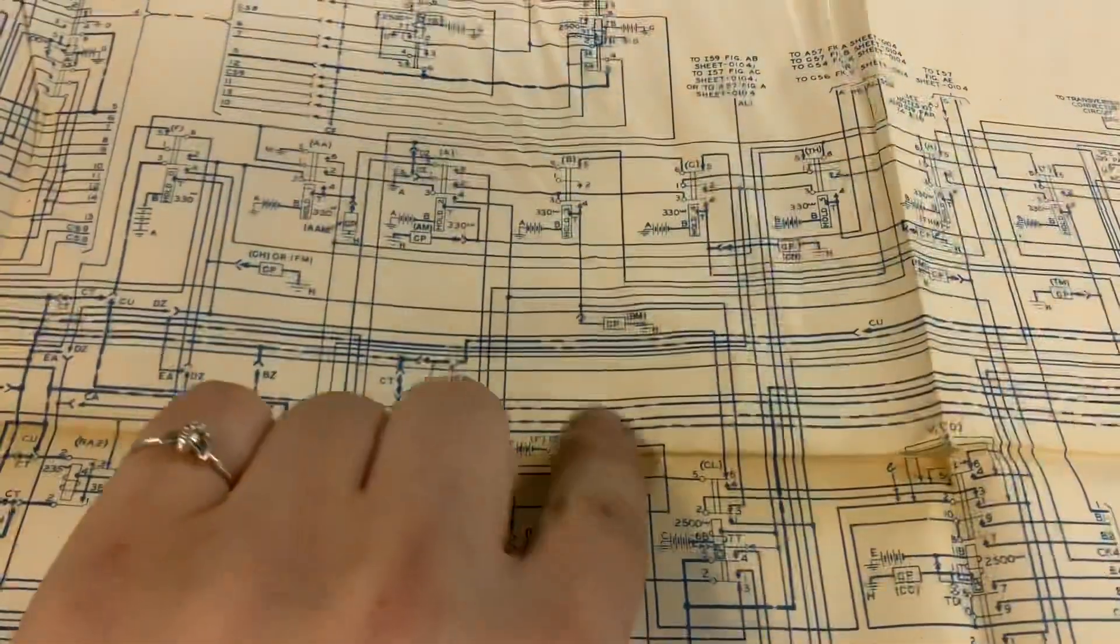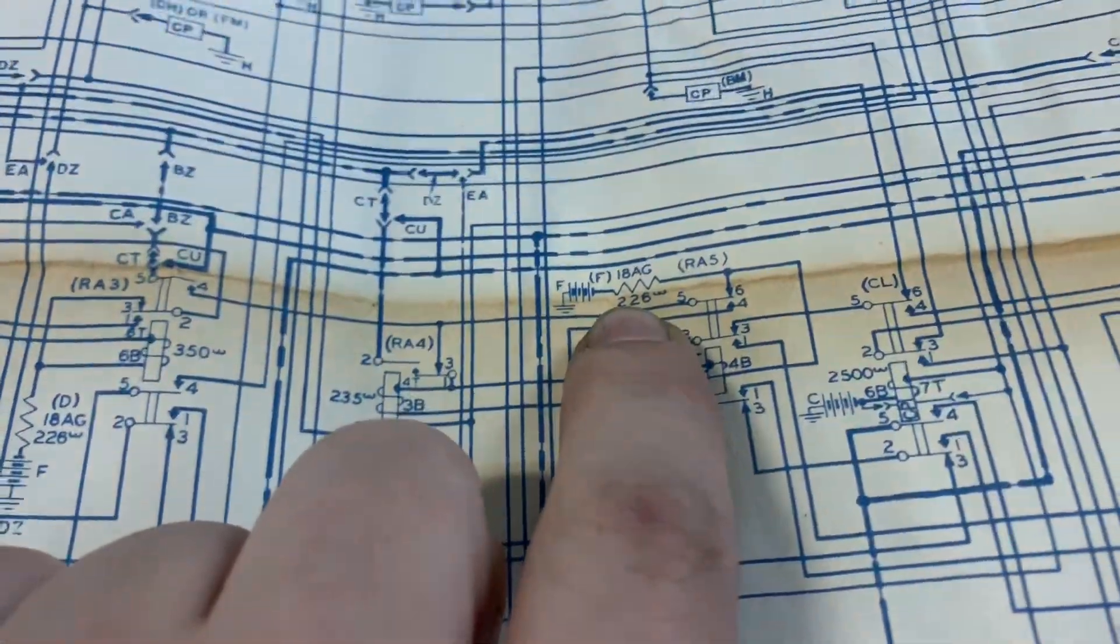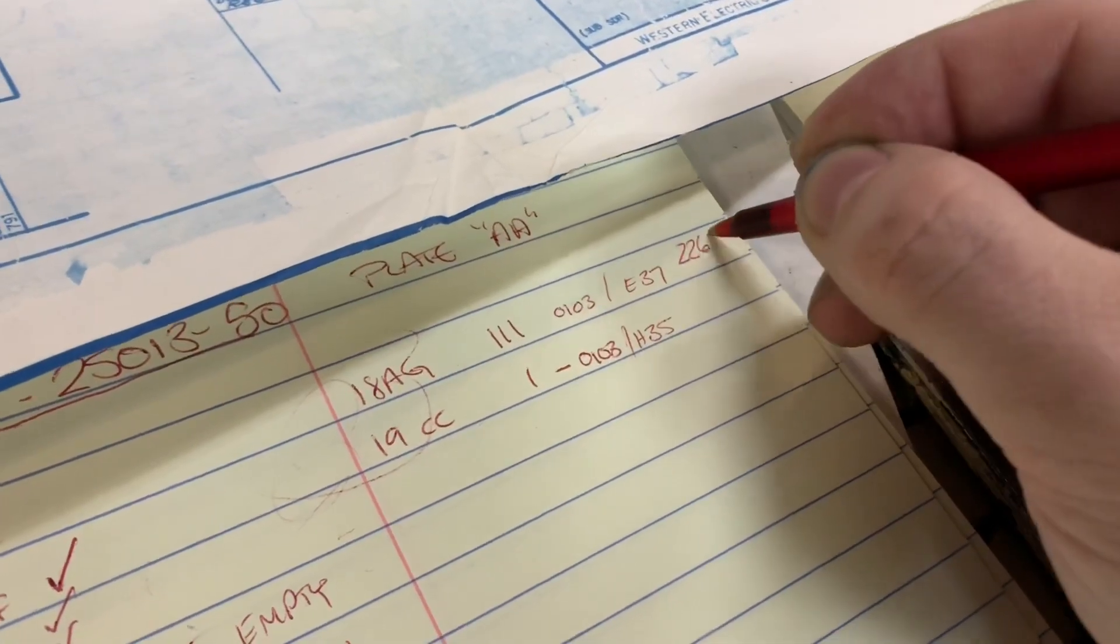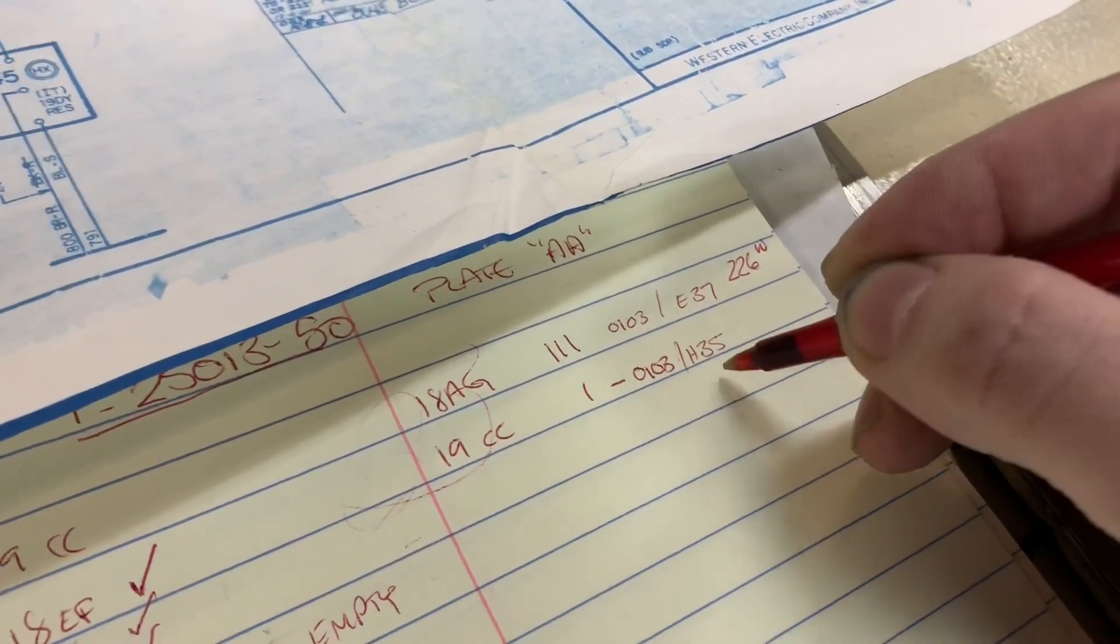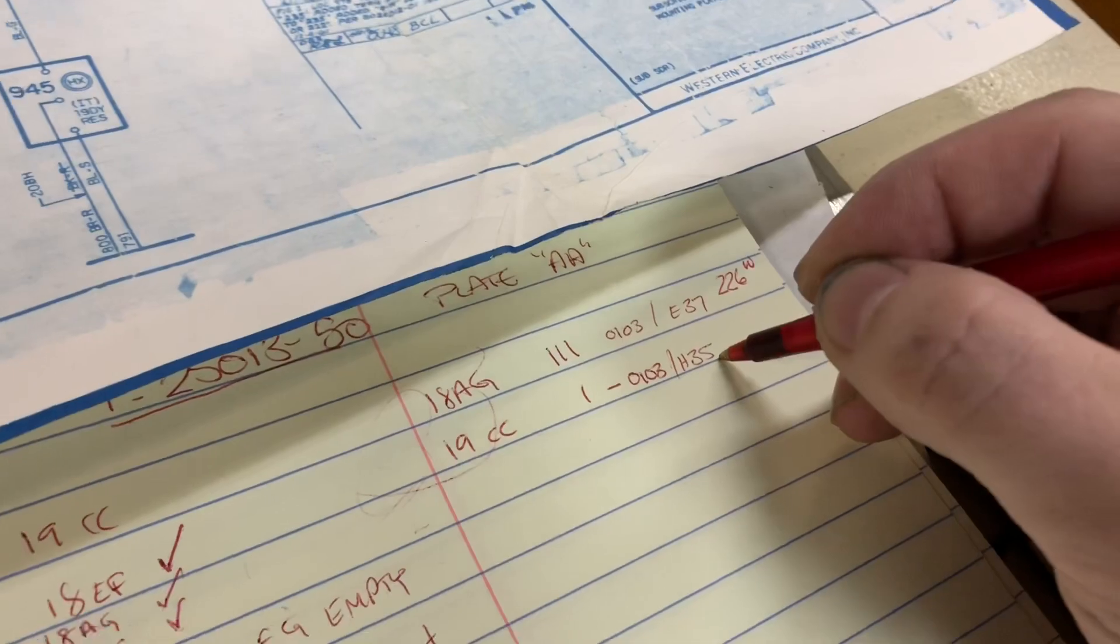D and E. D is 226 ohms and we need to find 19cc on H35.